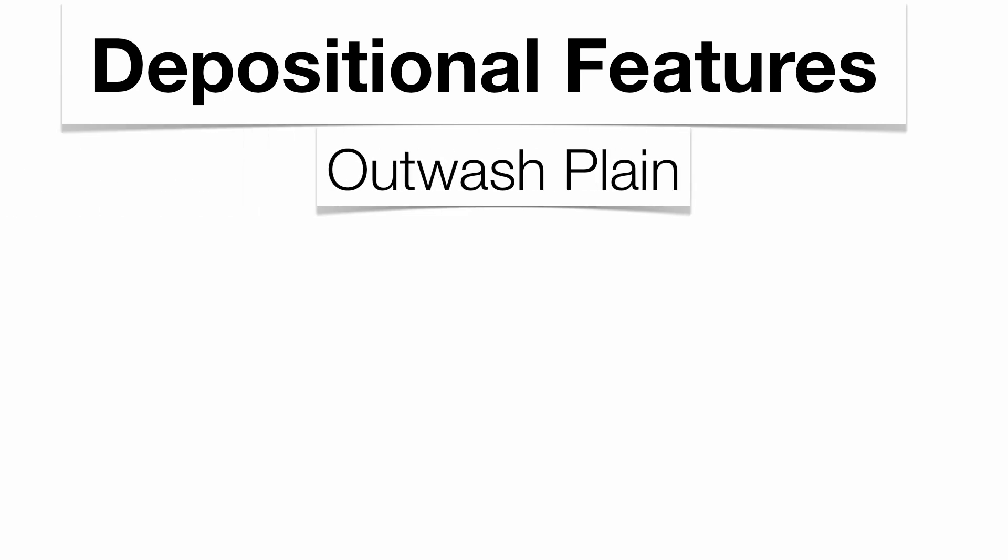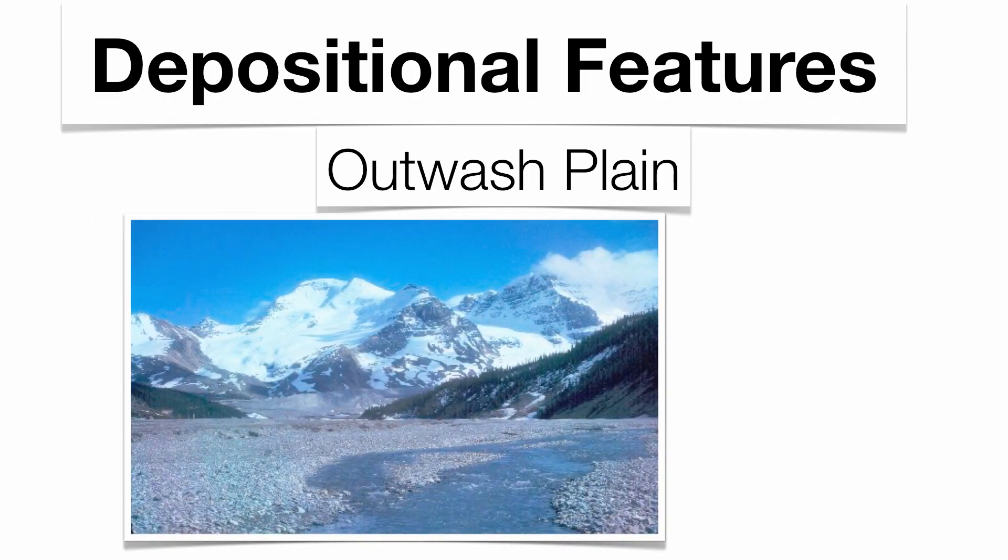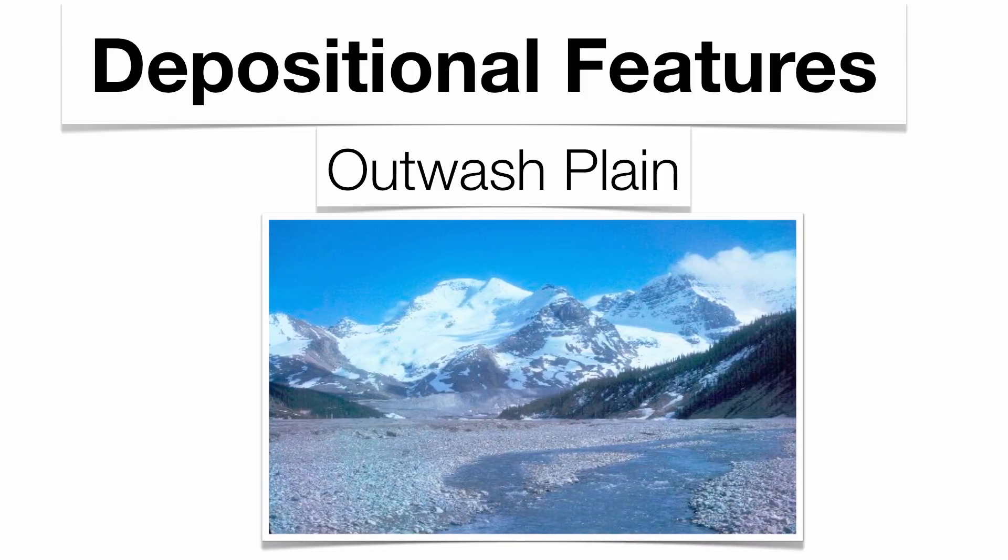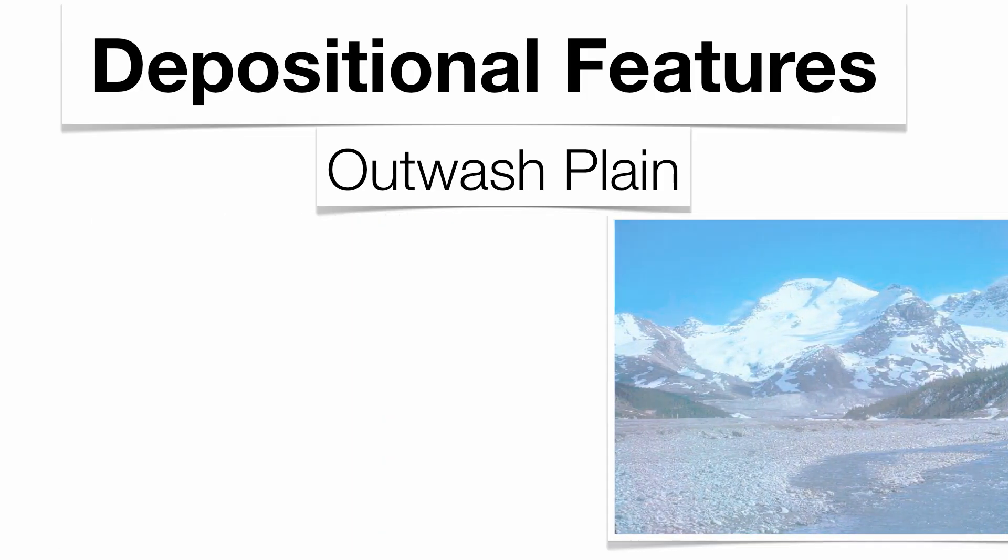Continuing with the depositional features, you can get outwash plains. When glaciers start to melt, they're going to start to organize their sediment at the base of the glacier, called an outwash plain. So all that sediment is somewhat sorted in nature.